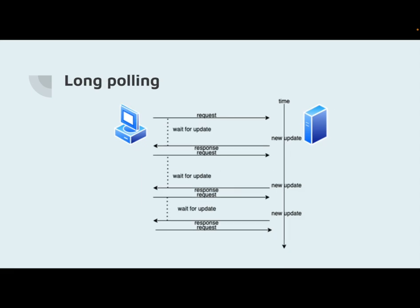Long-polling is another implementation of client requesting updates from the server. Unlike short-polling, long-polling sends a request to the server and waits until the server has updates to send back, avoiding cases where multiple requests return no changes. Long-polling attempts to minimize both the latency in server-client message delivery and the use of processing and networking resources.